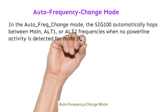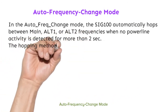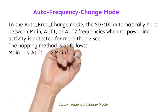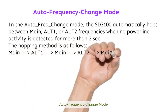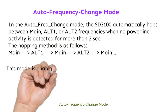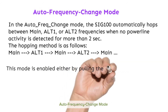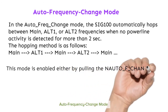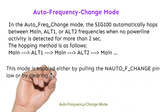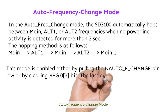The hopping method is as follows: main, ALT1, main, ALT2, main, and so on. This mode is enabled either by pulling the nAuto-F-Change pin low or by clearing REG0 bit 3. The last action prevails.